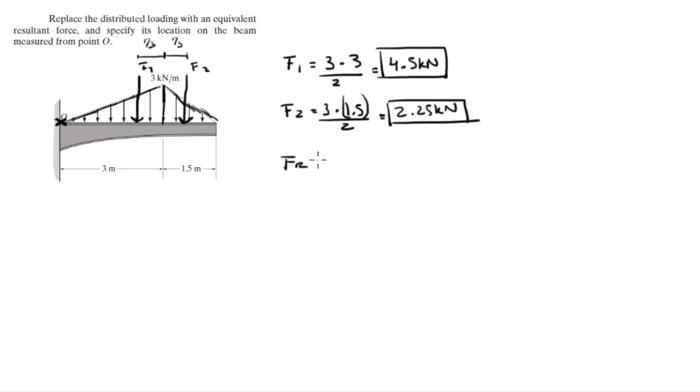So the resultant force is the addition of these two forces. They're both aiming the same way. So the resultant force comes out to be 6.75 kilonewtons going down.